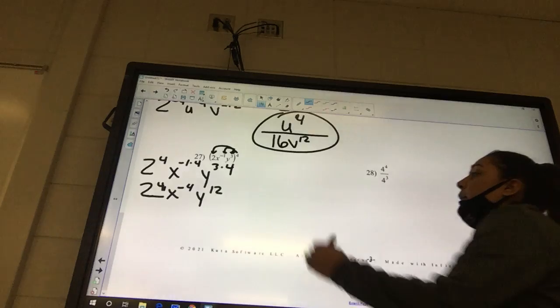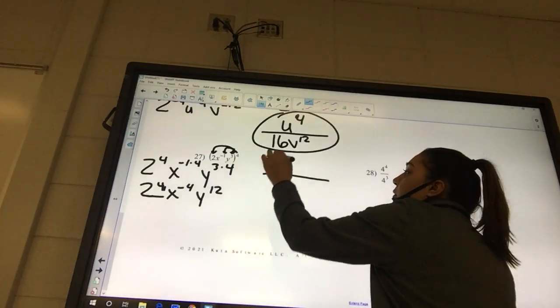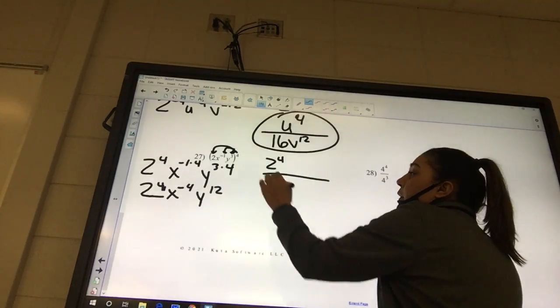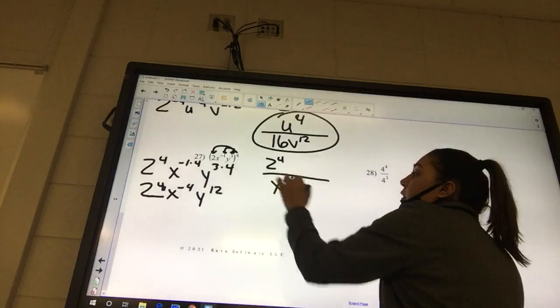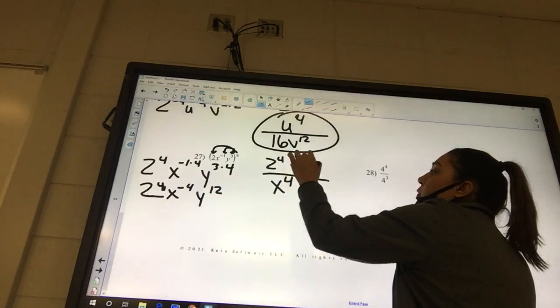Okay, now we need to move all of our negatives. So 2 to the 4th is going to stay on top. x to the 4th is going to go to the bottom, and y to the 12th goes on top.